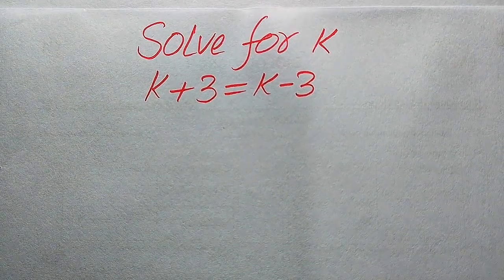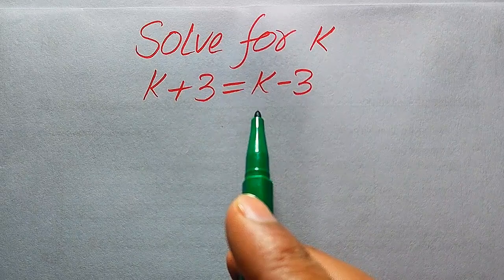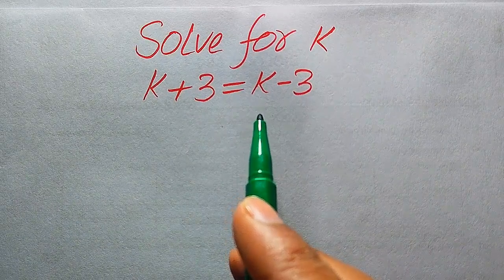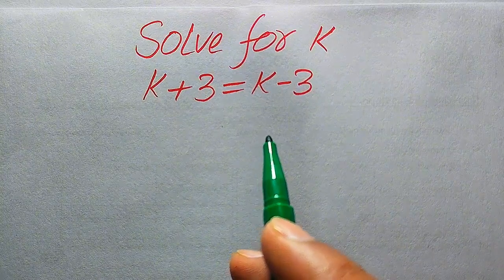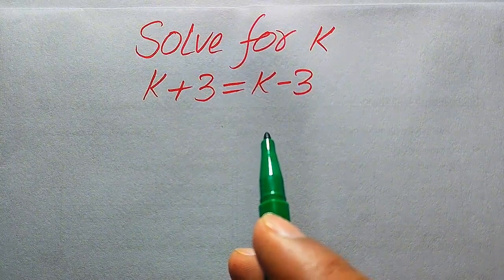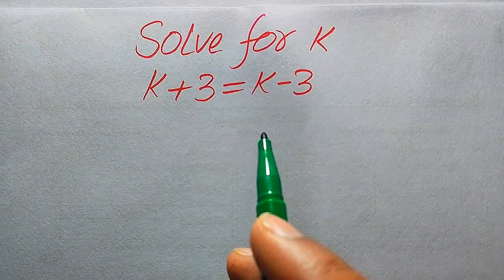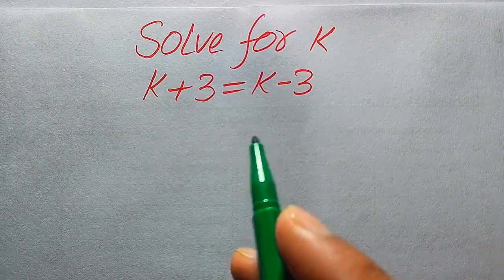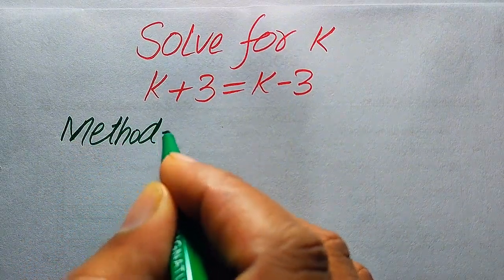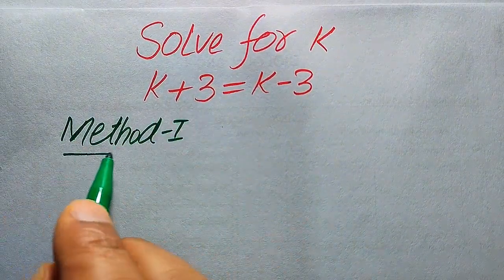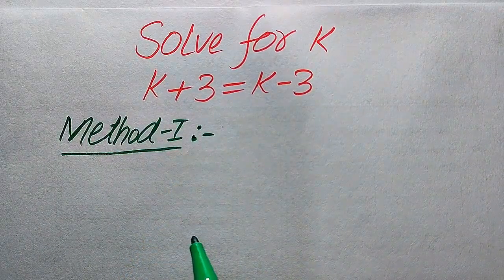Hello everyone, welcome. We solve this algebra problem where √(k+3) equals k minus 3. We solve this problem for all values of k. First we need to find all the roots of this equation, and at the end we will verify which roots are solutions and which are extraneous roots. We solve this problem using two methods.